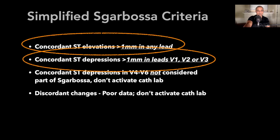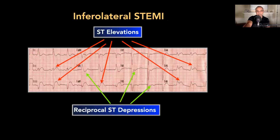This patient had both: concordant ST elevations in the lateral leads and concordant ST depressions in the right precordial leads. This was actually an inferior-lateral STEMI.